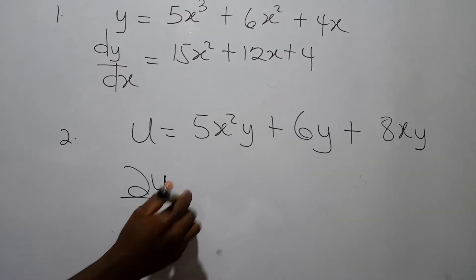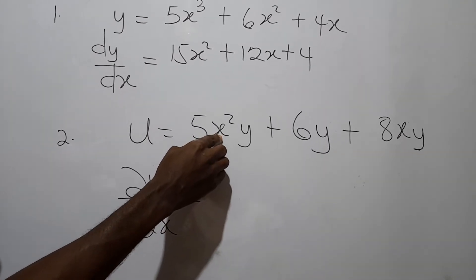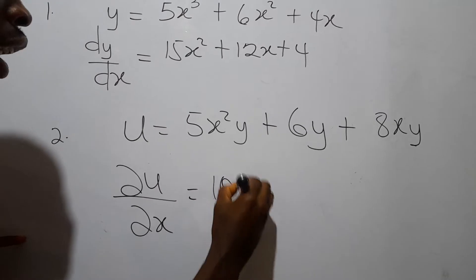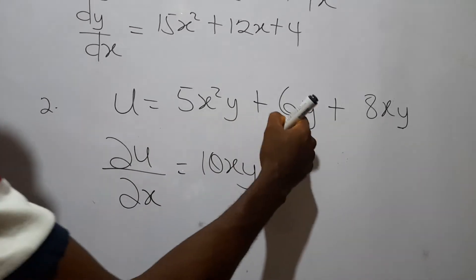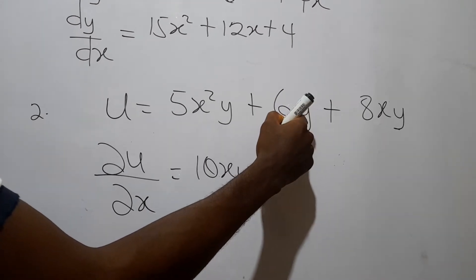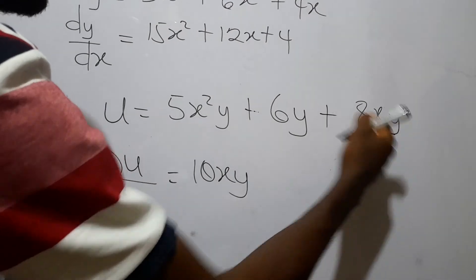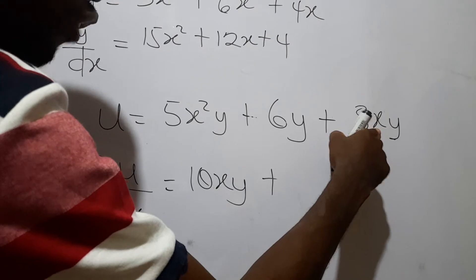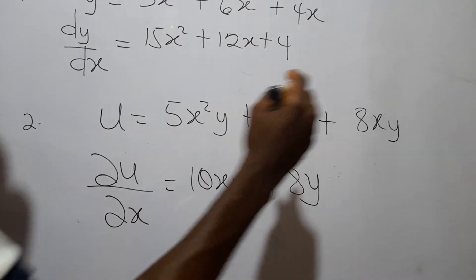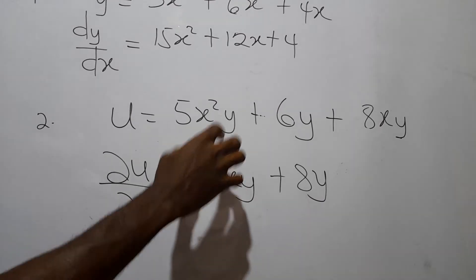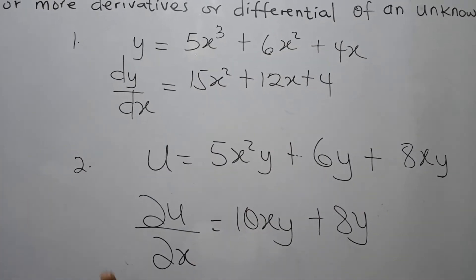When the differentiation is done with respect to x, y is held constant just like any constant. When we differentiate the x terms we get 10x, and y acts as a constant coefficient. When we differentiate terms with no x, the result is 0. Differentiating the term 8xy with respect to x gives 8y. This differentiation is called partial differentiation, while the earlier one with a single variable was ordinary differentiation. I hope you understand the difference between ordinary and partial differentiation.